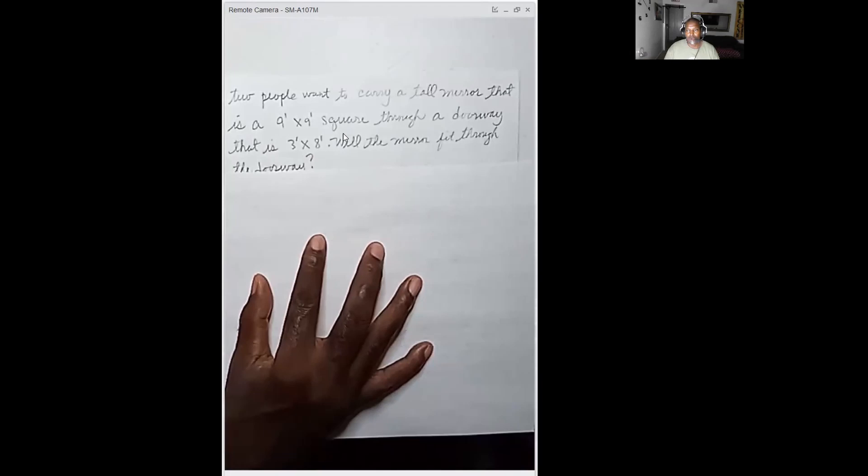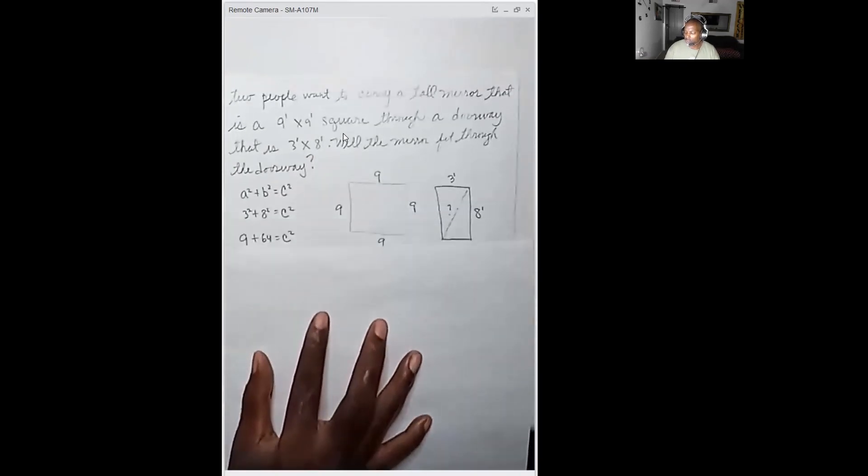My guess was no. I'm looking at a Pythagorean problem. For my estimation, I'm saying 64 plus 9 is going to be 73. I take the square root of that, it's going to be less than 9. That was my guess. Let me show you how you solve this problem.